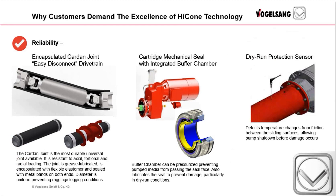On the reliability side, Vogelsang uses the most durable universal joint available on every HyCone pump — the Carden joint. It's superior in every way and perfectly matched with the HyCone product. Our proven quality cartridge seal incorporates a liquid-filled and pressurized zone, ensuring that the seal faces remain lubricated and free of contamination. Third, the three-wire PT100 temperature probe is utilized for recognizing elevated temperature of the stator from friction, allowing shutdown of the pump prior to dry run damage.